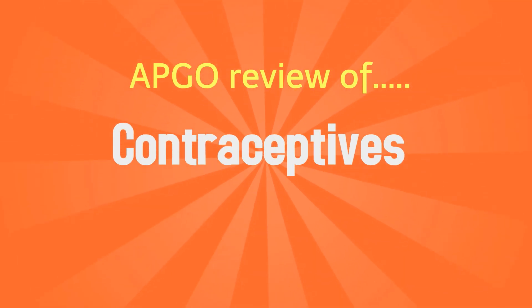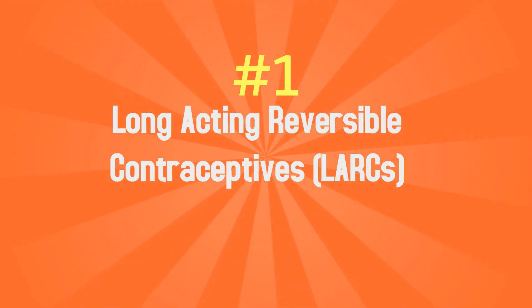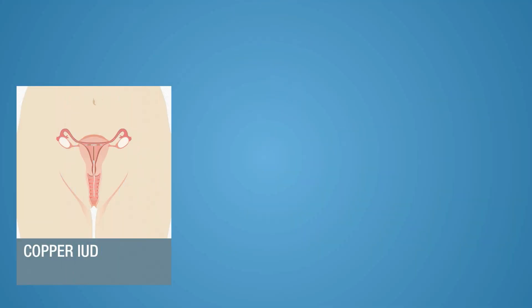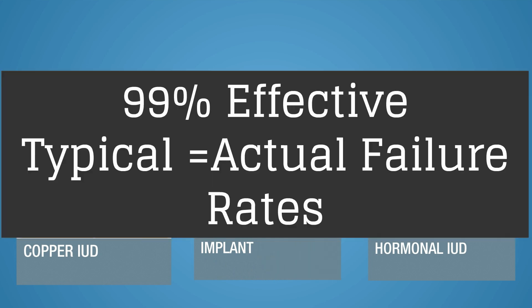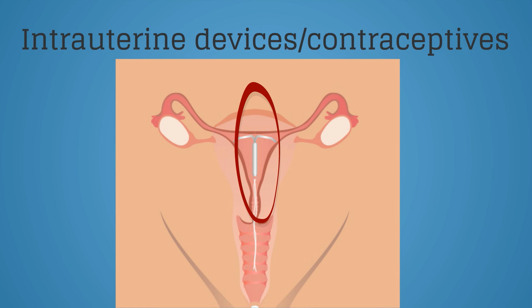Let's begin APCO's review of contraception from most to least effective. Number 1: the long-acting reversible contraceptive methods, or LARCs, which include intrauterine devices and the implant. They are over 99% effective and there is virtually no difference between typical and actual failure rates. Intrauterine devices are inserted by a healthcare provider and the IUD is located in the fundal portion of the endometrium. The strings are trimmed to sit outside of the external os of the cervix. There are two forms of IUDs: the copper and the progesterone IUD.